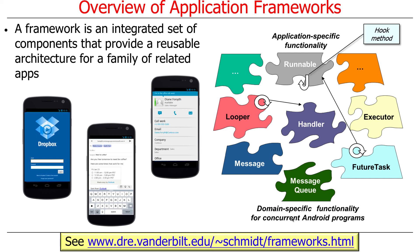The third thing is a semi-complete application, meaning a lot of the code is provided for you. You just have to fill in a few blanks, which are called hook methods. For example, the run method in the thread world is a hook method — you have to implement, subclass, or override it to get it to do something interesting for your application, and then you get all the rest of the framework for free. So the three things are: inversion of control, domain-specific functionality and structure, and semi-complete applications with hooks left in to be overridden and filled in.